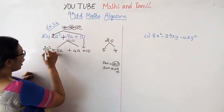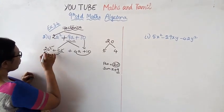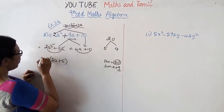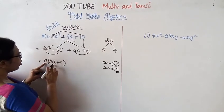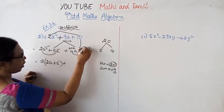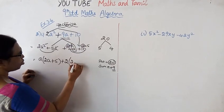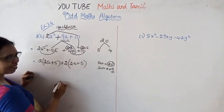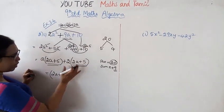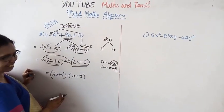Now we take the common factor from each group. From the first two terms, take a common: a into a plus 5. From the last two terms, take 4 common: 4 into a plus 5. Both groups share the common factor a plus 5. So the answer is a plus 2 into a plus 5.